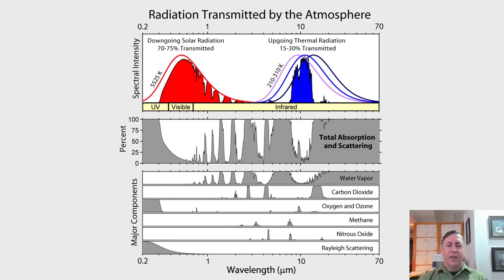These graphs show atmospheric absorption and scattering at different wavelengths. The largest absorption band of carbon dioxide is similar to the thermal emission wavelengths from the ground, and it also partly closes the window of transparency of water, hence its major effect.